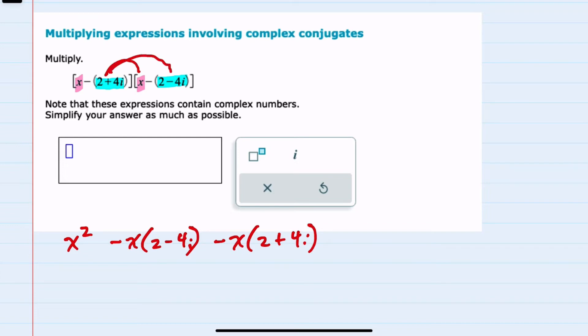And then lastly, we have to multiply the complex numbers here. Each one of these have a negative in front of them, but a negative times a negative would just be a positive. I'm just going to write this out as a 2 plus 4i times a 2 minus 4i.